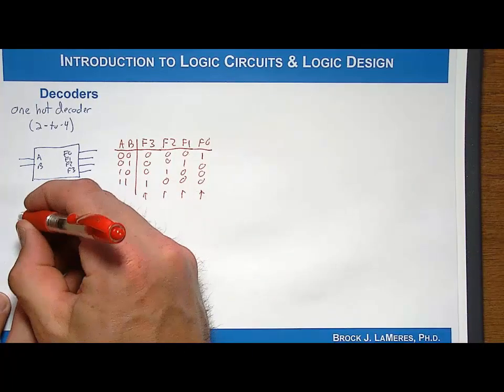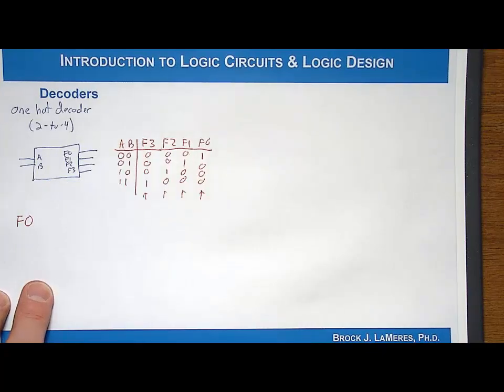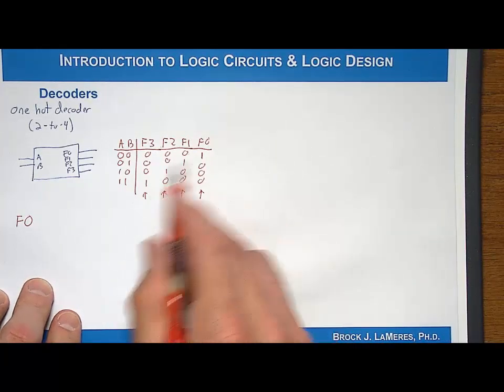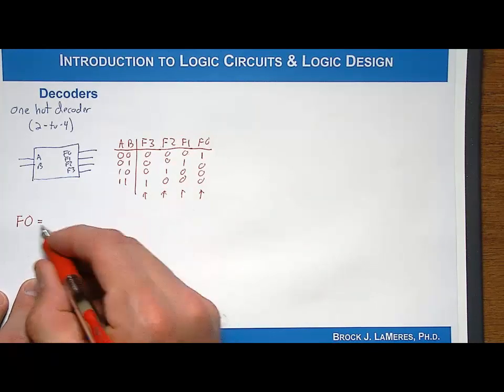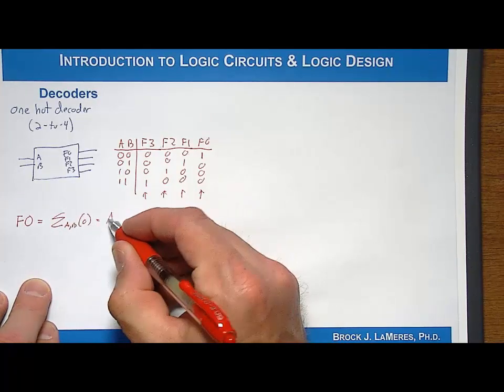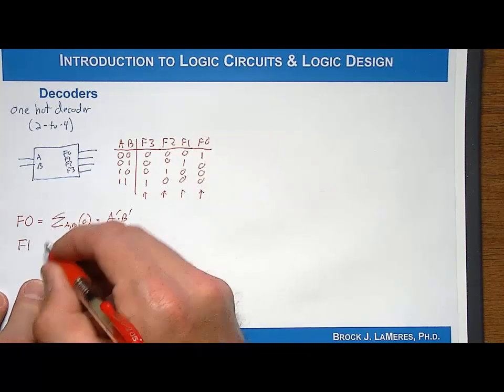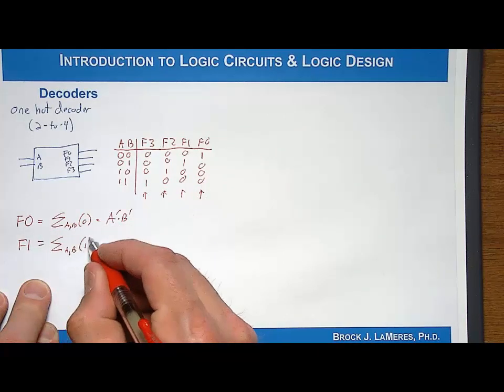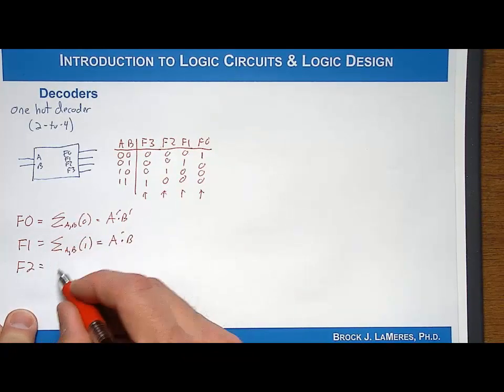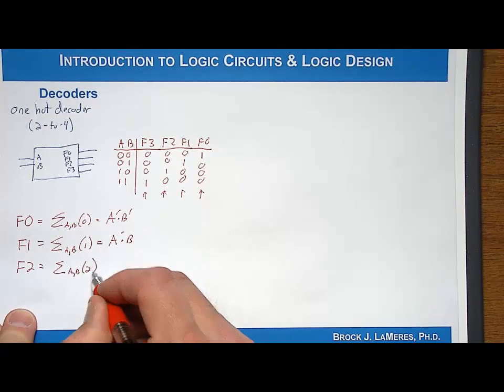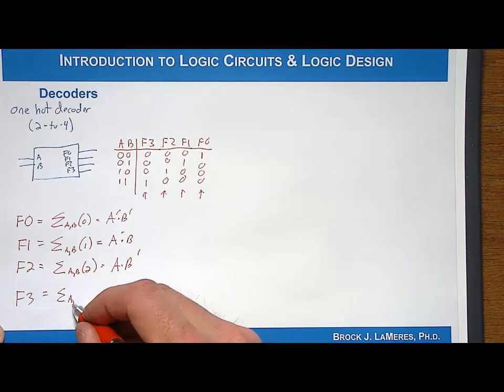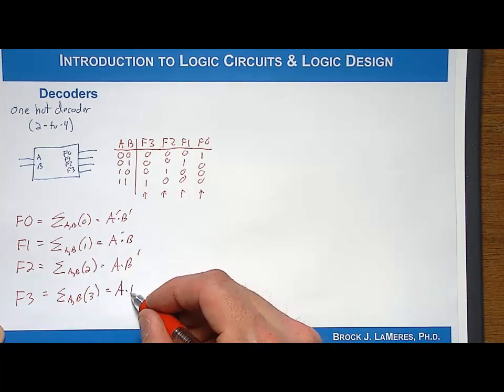Let's start with F0. In a one-hot decoder, one of the easiest ways to do it is to synthesize it using a canonical form. I'm going to write the logic expression for F0. It's going to assert for only row zero, and I'll write the min-term for it, which will be A0 and with B0. Then the logic expression for F1 is going to assert for only row one, and that will be A0 and with B. Then the logic expression for F2 is going to be asserted only for row two, and that will be A and with B0. And finally we have F3, which is only going to assert for row three, and that's going to be A and with B.